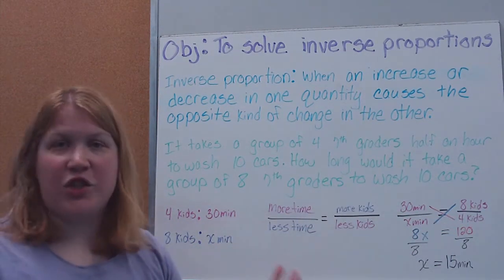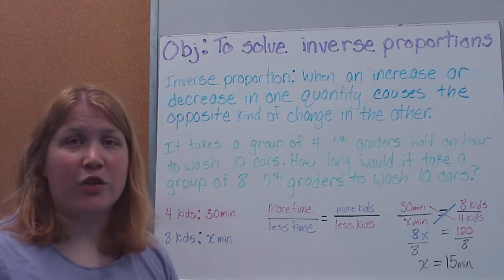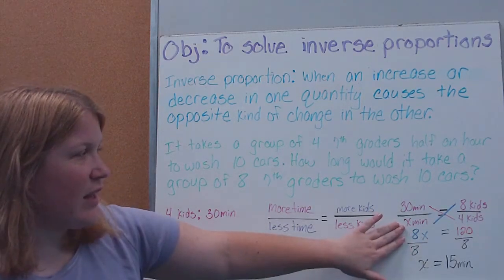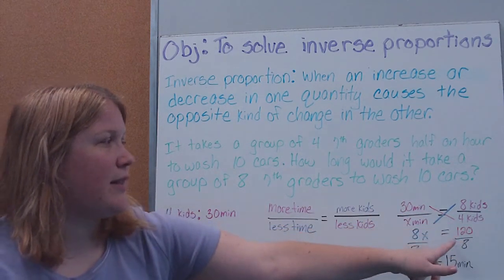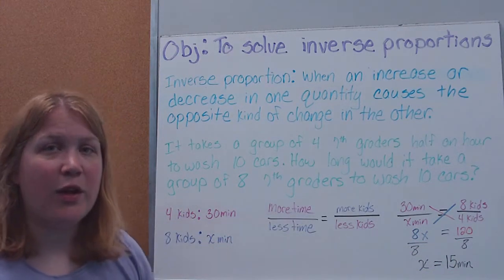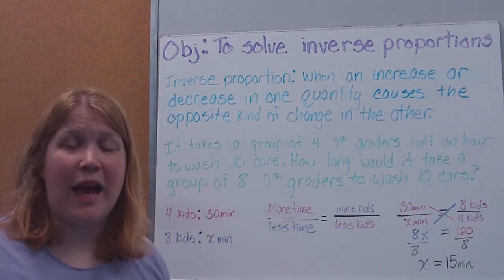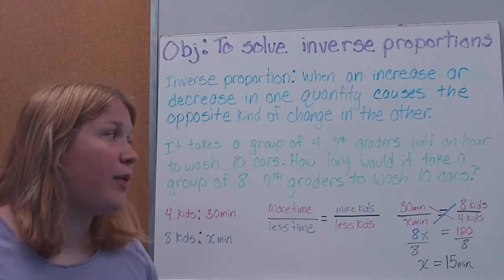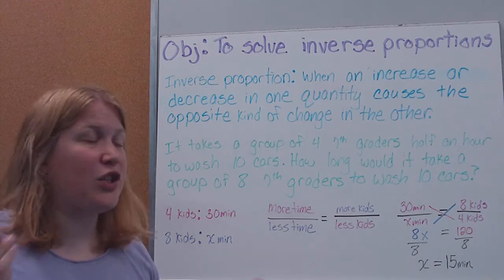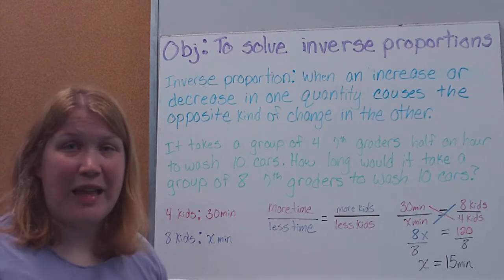So, 30 minutes is my longer amount of time because it took four kids more time. So, the less time would go down here. Well, it takes eight kids less time. So, the more children should go on top, less children should go on bottom. Once we have it set up, then it's just going back and solving proportions the way we've been doing it using our cross-product rule. So, again, the big thing it comes down to is making sure we've set it up properly. So, once we've set it up, we get 8 times X and 30 times 4. When I solve for it, I find that it should take 15 minutes. So, then you want to go back and 15 minutes is less than 30. So, that makes sense because it should take more kids less time.